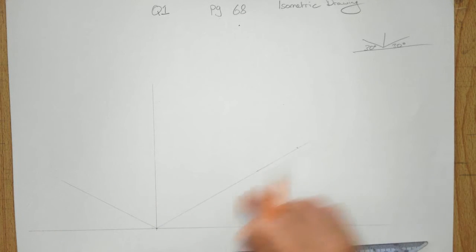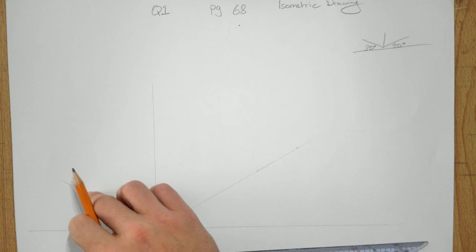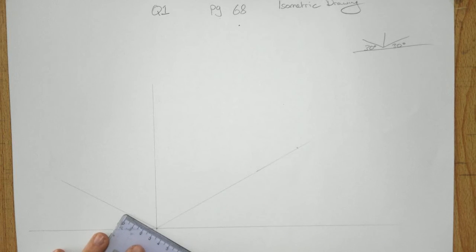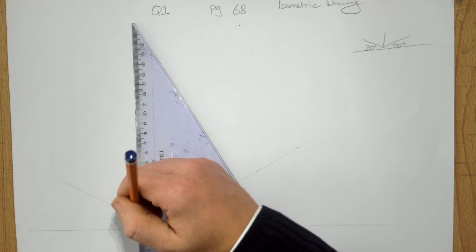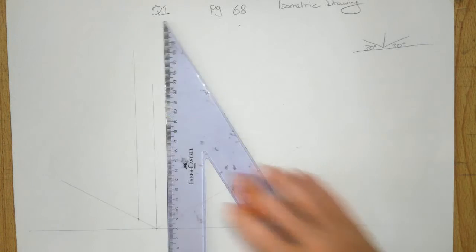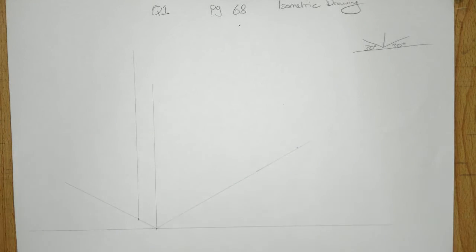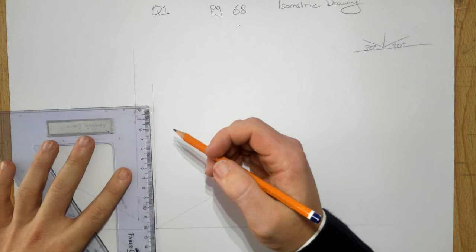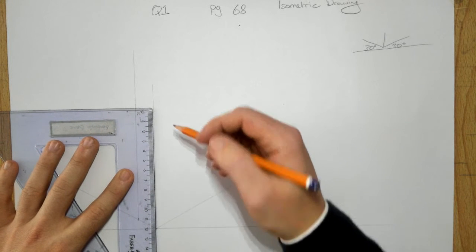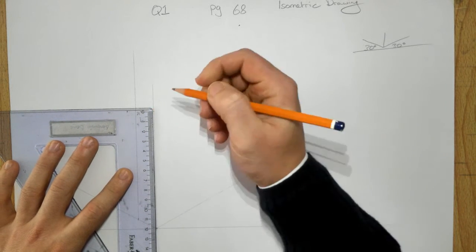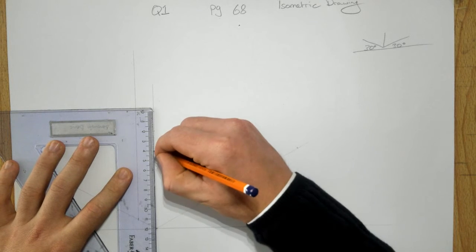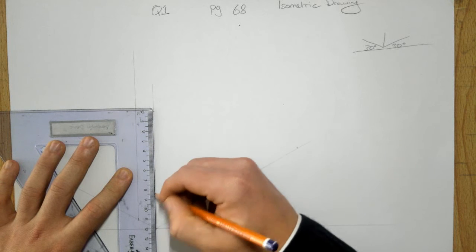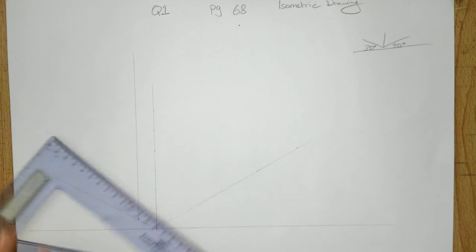This is going to be my length, this is going to be my height, and this is going to be my depth. So the depth is 20 mil. I'm going to draw a horizontal line up there as well. My height is 120, but there are 20 mil squares, so just mark intervals of 20 mil on my horizontal line.